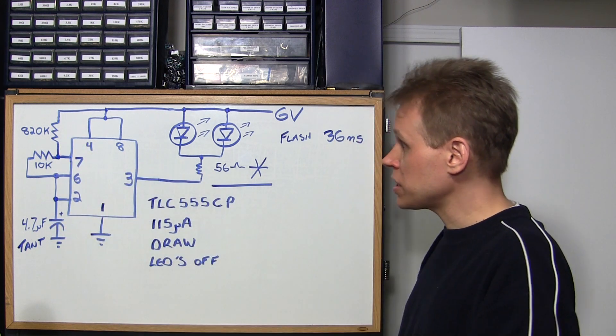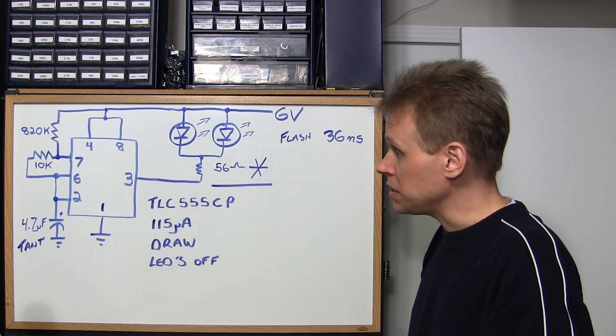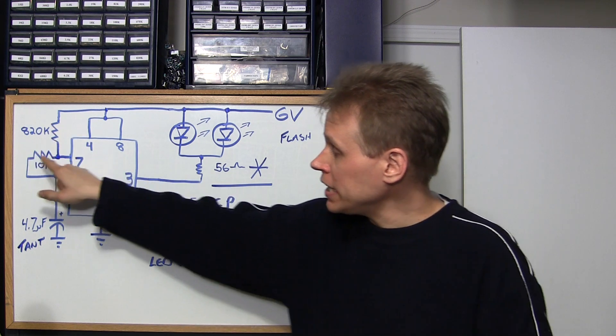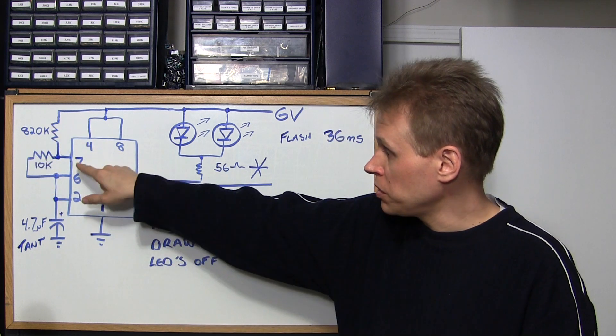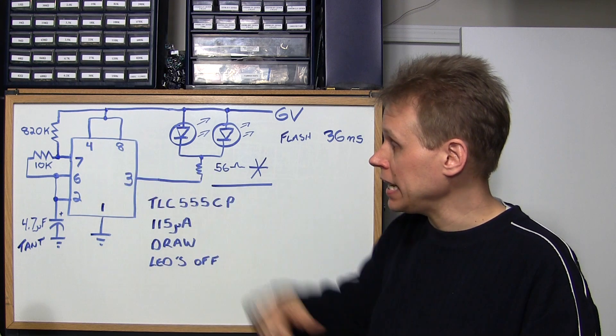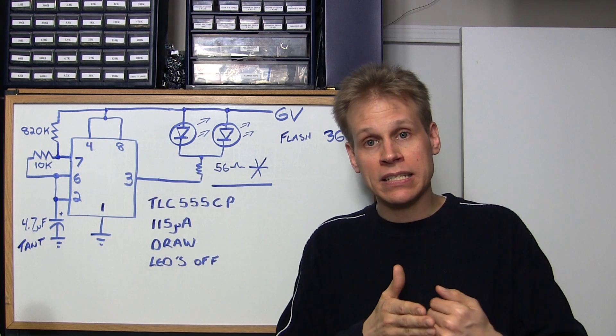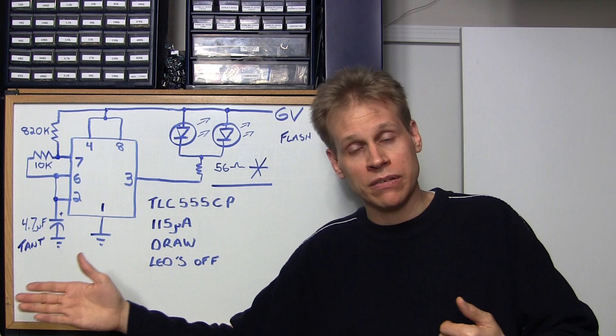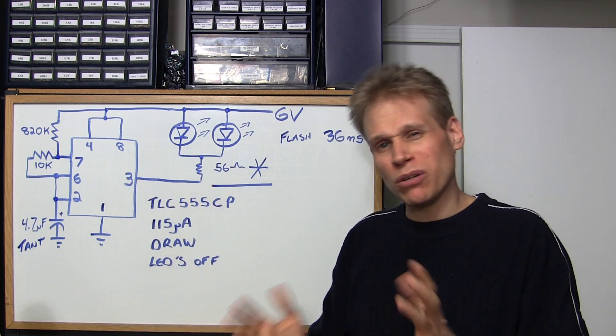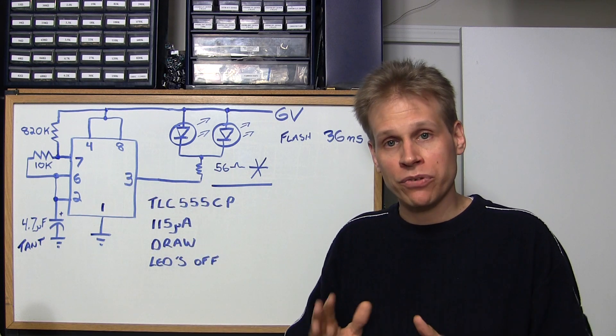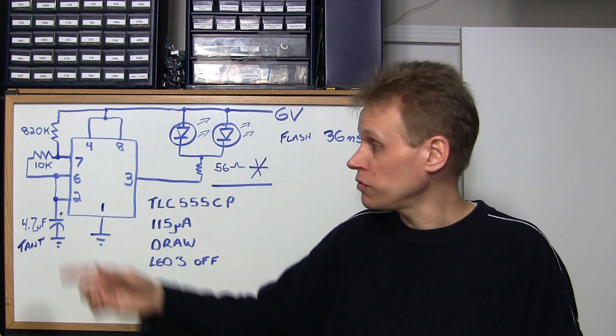These two resistors and this capacitor set the flash rate of the LEDs. So the 820k ohm resistor up here between pin 7 and pin 4 and 8 is what sets the distance between the flashes. So right now it's about maybe 2.5 maybe 3 seconds between flashes. So if you were to take that 820k resistor up to 1 meg or higher you might get 5 seconds or maybe 7 seconds between flashes.